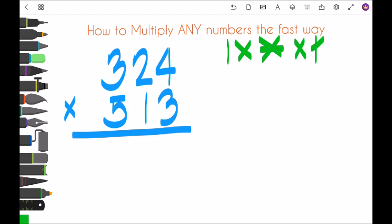four times three is twelve, so two carry one. And then next is one, one times four is four, plus six is ten, plus one, eleven, so one carry one.